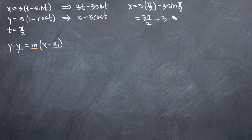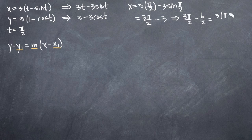We can simplify this by finding a common denominator. So we'll get 3 pi over 2 minus 6 over 2, which gives us 3 times (pi minus 2) all over 2. Since this is the value we found when we plugged in pi over 2 to our x equation, this equals x₁.